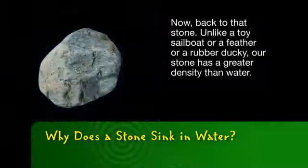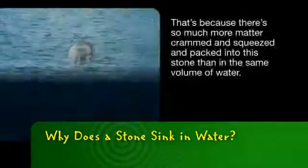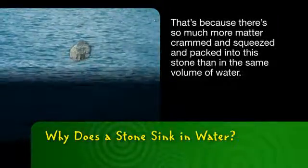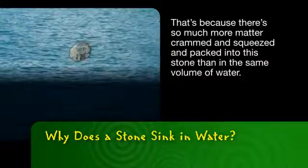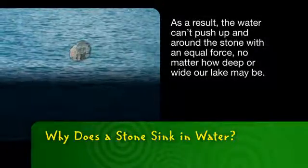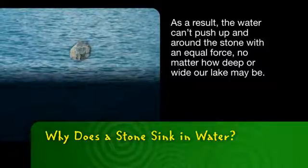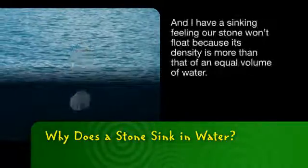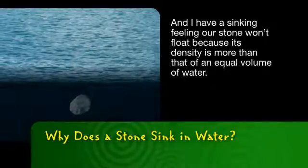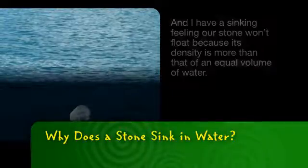That's because the sailboat's weight is less than the weight of the same volume of water. Now back to that stone. Unlike a toy sailboat, or a feather, or a rubber ducky, our stone has a greater density than water. That's because there's so much more matter crammed and squeezed and packed into this stone than in the same volume of water. As a result, the water can't push up and around the stone with an equal force, no matter how deep or wide our lake may be. And I have a sinking feeling that our stone won't float, because its density is more than that of an equal volume of water.